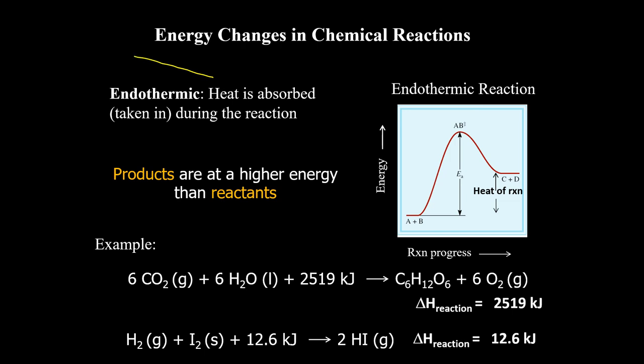Conversely, this is an endothermic process. If you remember, endothermic means you will gain energy. You have to gain energy for the reaction to occur. This is photosynthesis. We have here the energy on the reactant side, 2519 kilojoules for photosynthesis. And we also have here when H2 gas plus I2 solid reacts with 12.6 kilojoules of energy, this reaction occurs to give us hydrogen iodide.